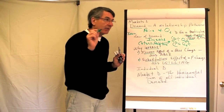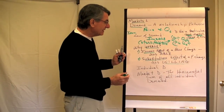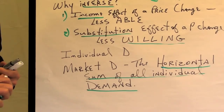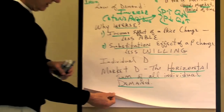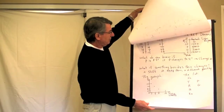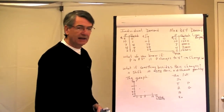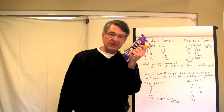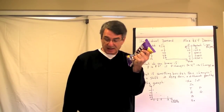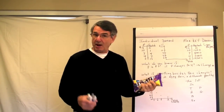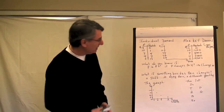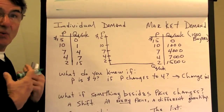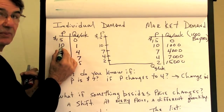It turns out that we are after market demand here, and market demand is the horizontal sum of all individual demand. Here's individual demand. Let's say I'm going to sell one-pound bags of peanut M&Ms. What determines the quantity demanded in our market this week? If the price is $15, the quantity I want to buy is zero. If the price is $10, I'll buy one. If the price is $7, I'll buy four. If the price is $4, I get seven a week. And if the price is $2, I buy 15 bags and share with friends.